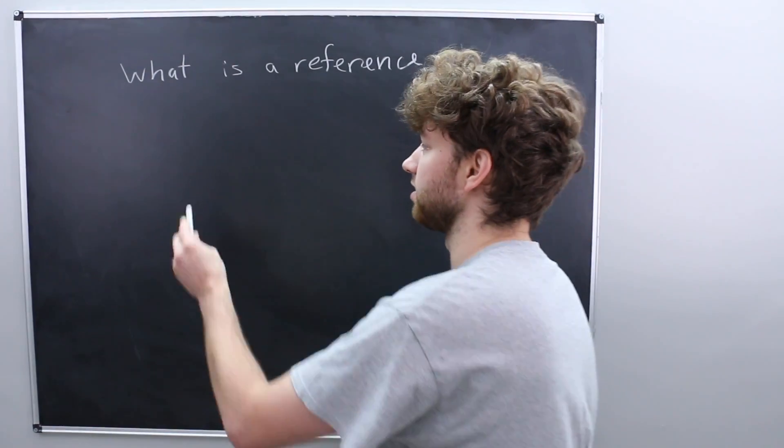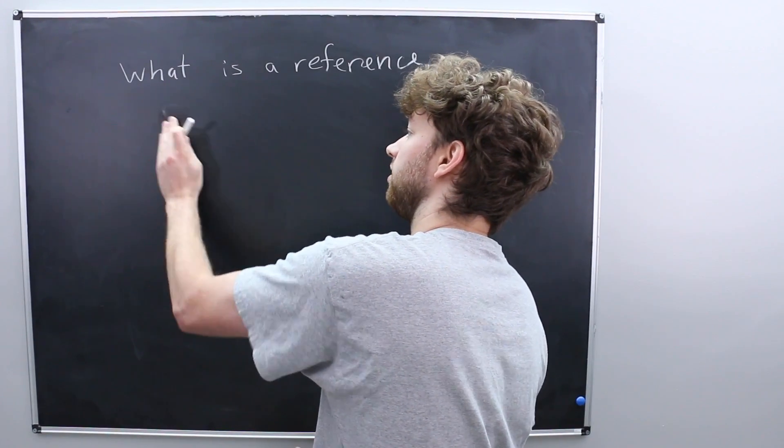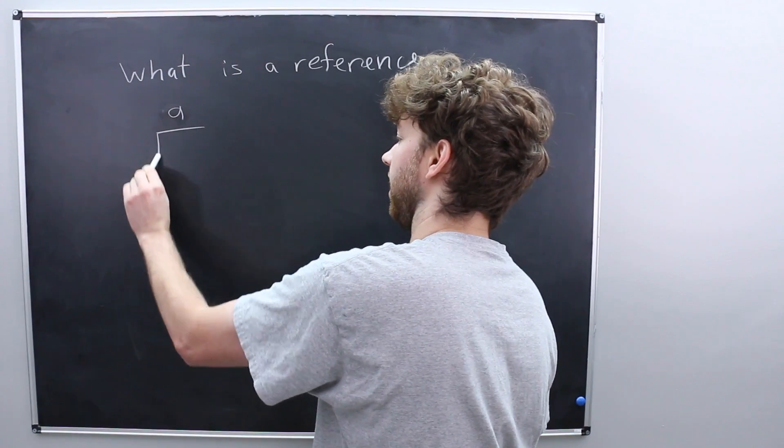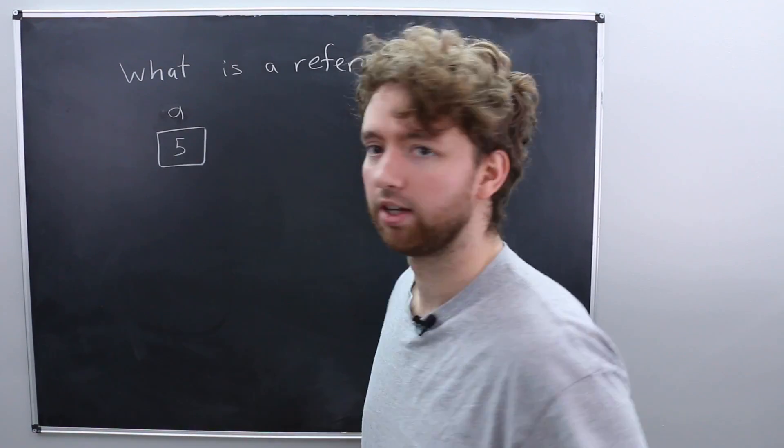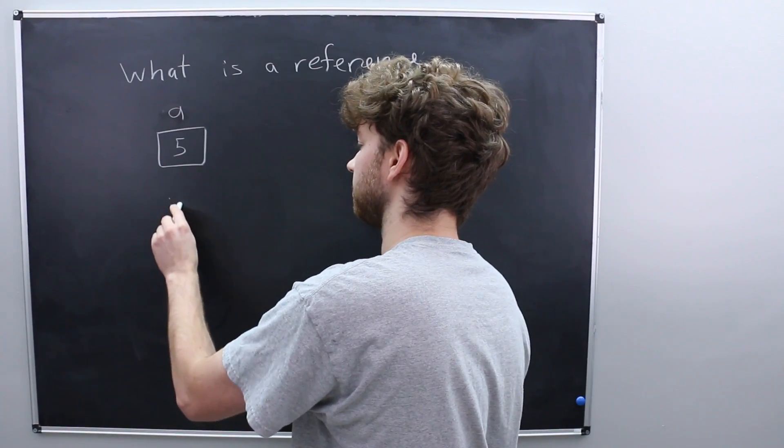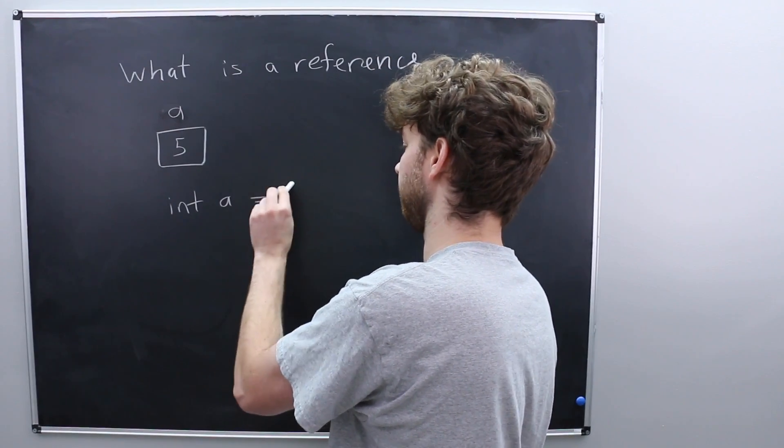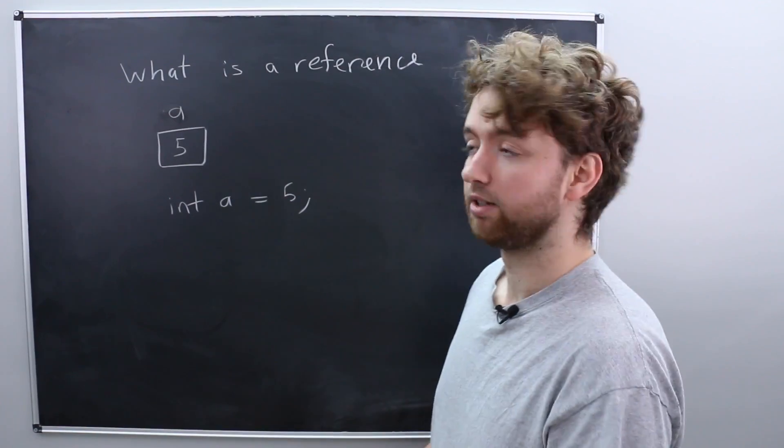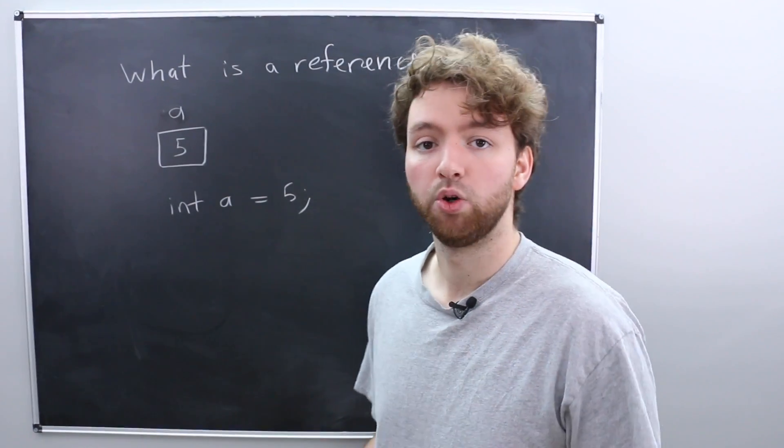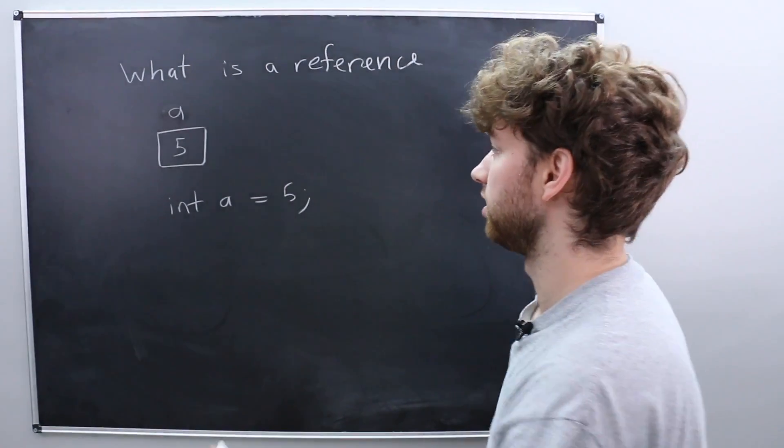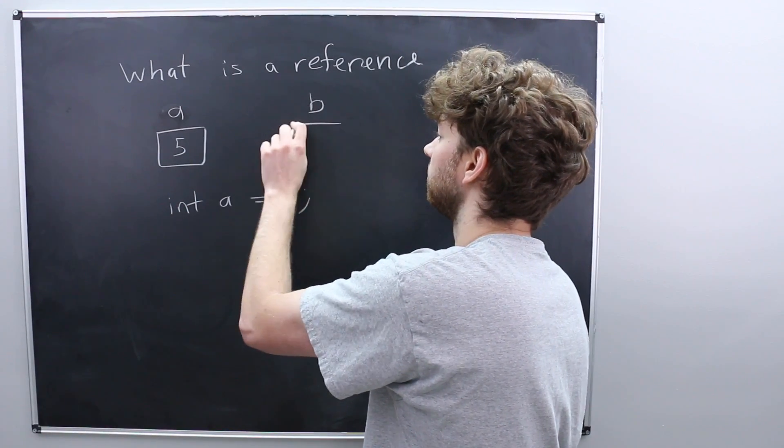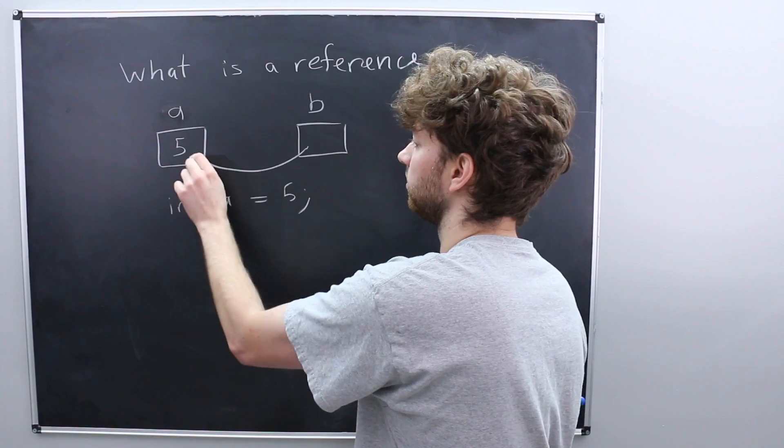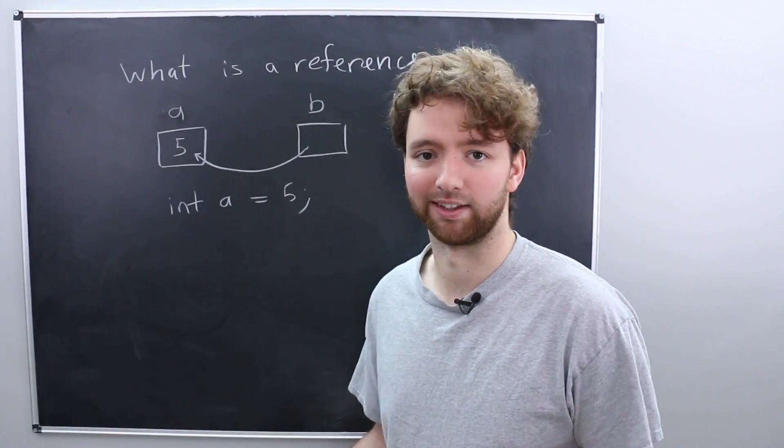A reference allows us to refer to some area of memory. And you're going to see this if, for example, you create a variable, we'll just call it A, and it's going to contain the value 5. So the way you would do this in C++, it's really hard. Int A is 5. So we just created that variable. We can create a reference to this same location, and it's going to look like this.